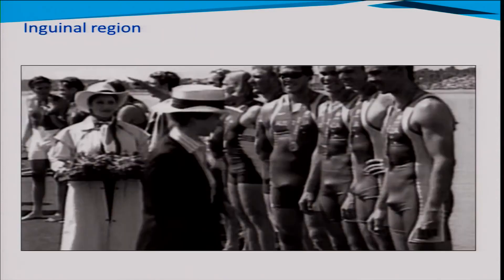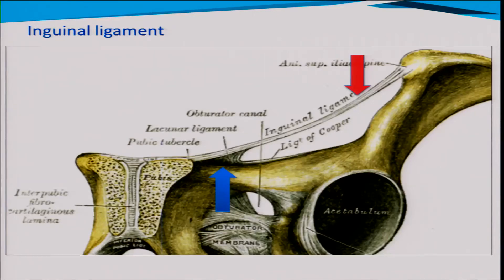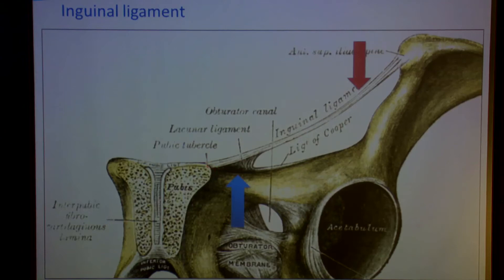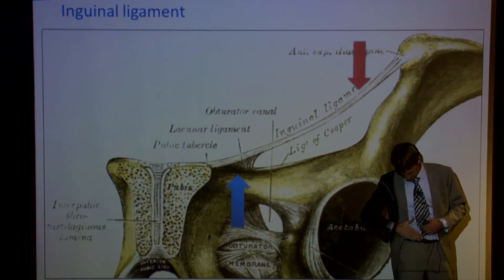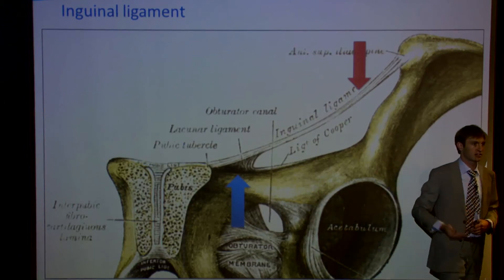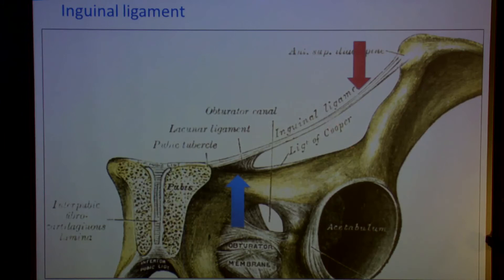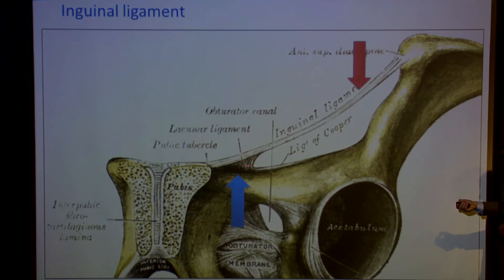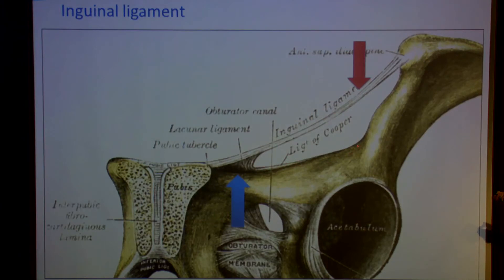Zooming in on the inguinal region, we'll start with the ligament structures. At the superior aspect of the pubic bone we've got the pubic tubercle, and coming up from that the inguinal ligament runs up to the anterior superior iliac spine. The inguinal ligament is actually the external oblique that folds over on itself to form a thickening at the lower end. Running back almost horizontally from the inguinal ligament is the lacunar ligament, which inserts onto the ligament of Cooper — also known as the pectineal ligament — as it runs along the pectineal line at the brim of the pelvis.